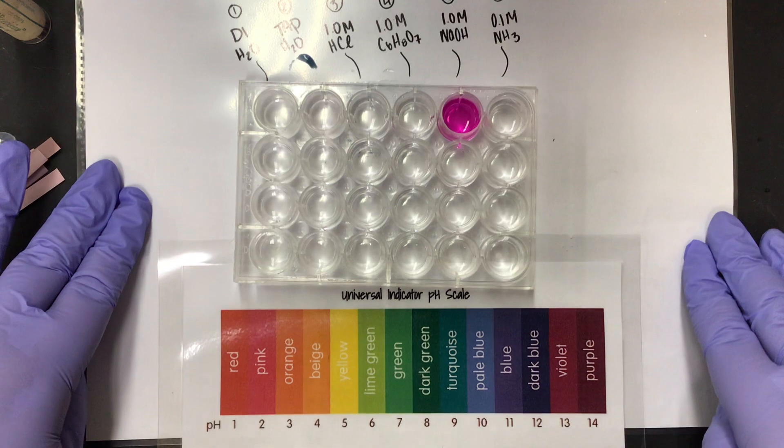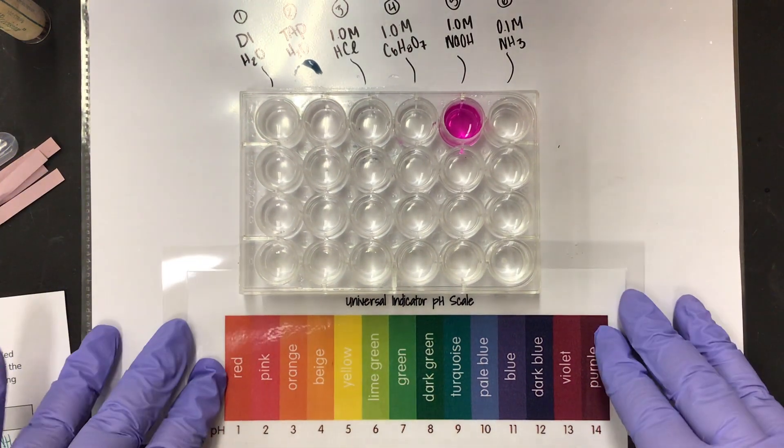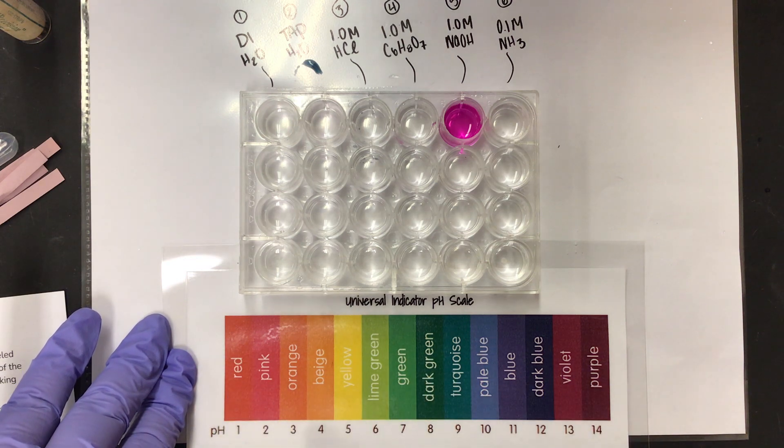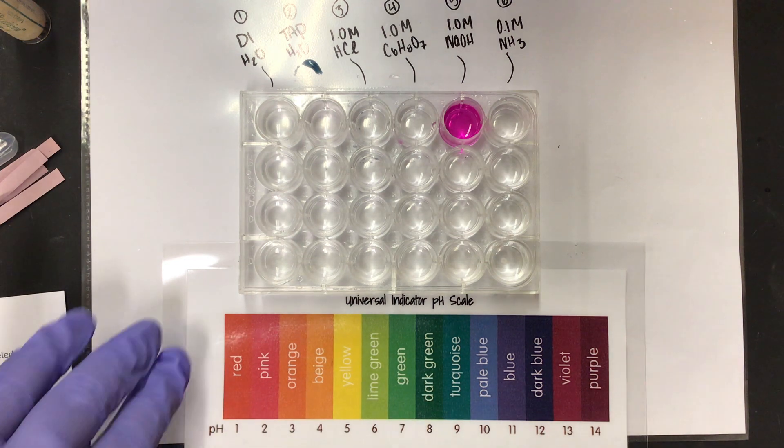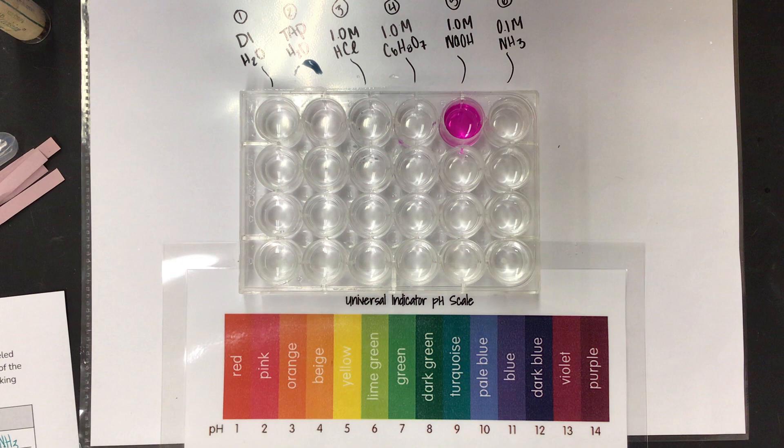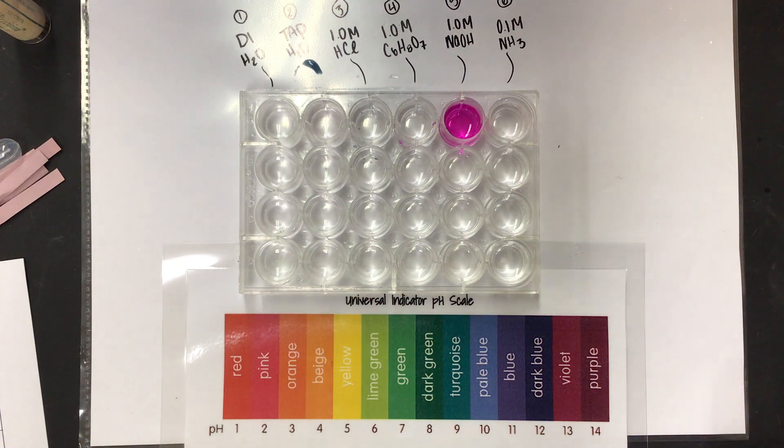Here are the colors that universal indicator could turn and underneath it is the corresponding pH values. I'm going to put a couple drops in each of these wells, identify the color, record that in your data table, and then indicate the approximate pH based on the color.